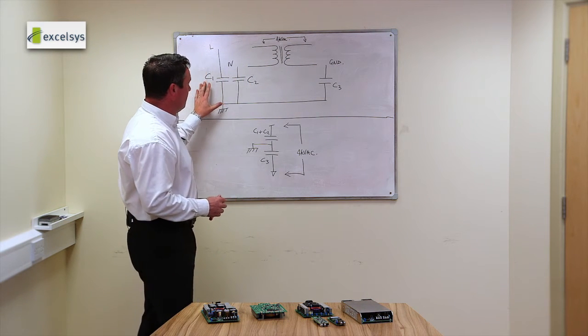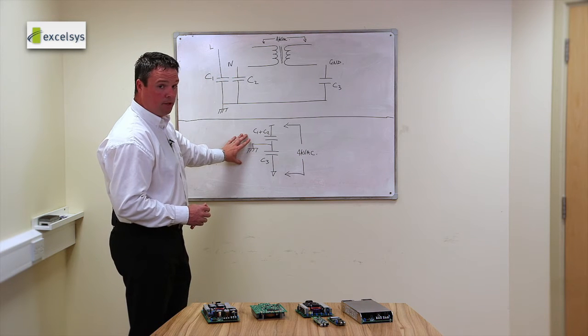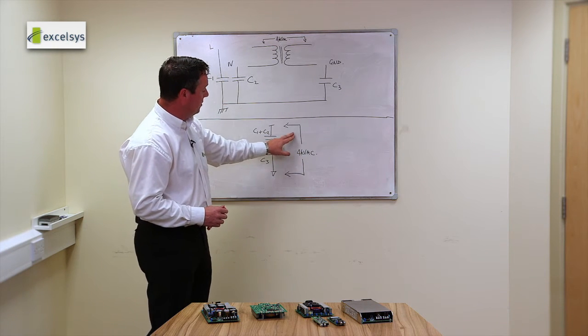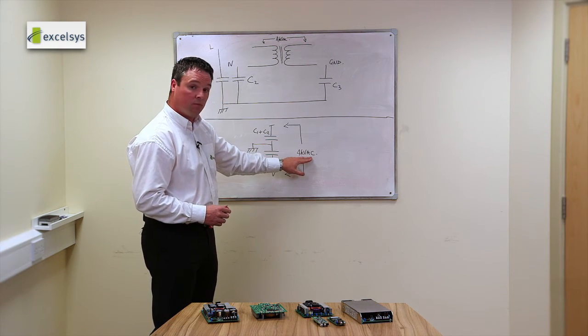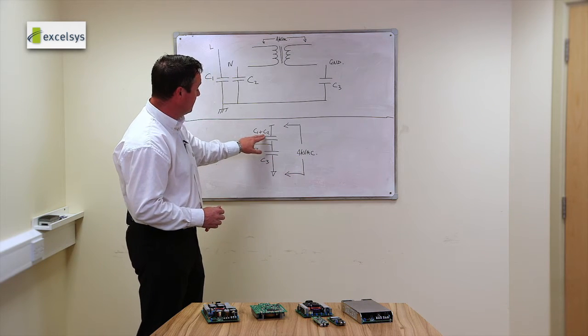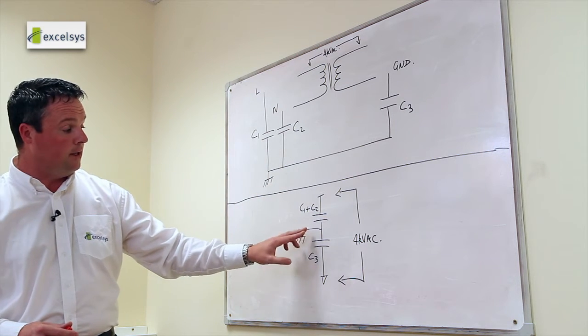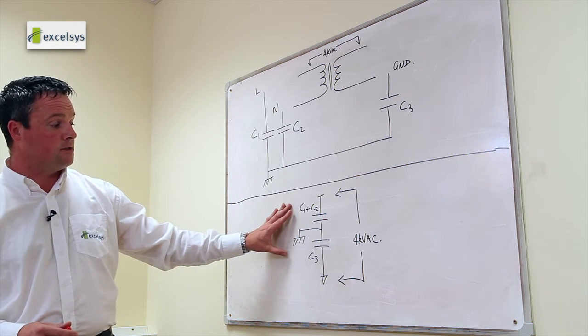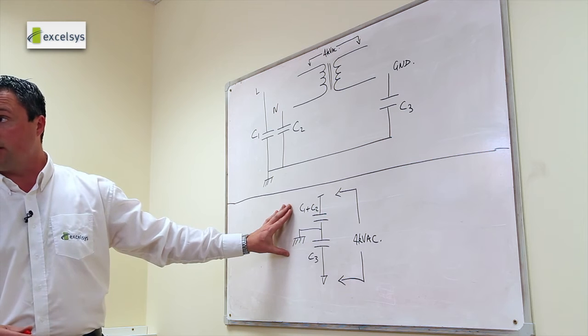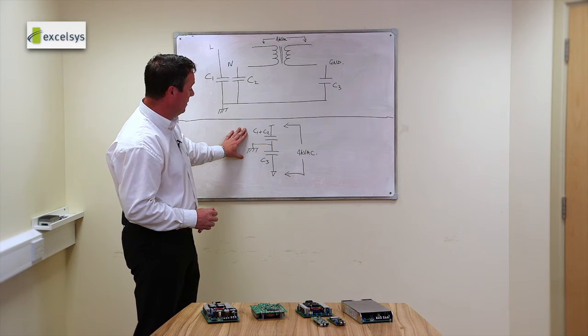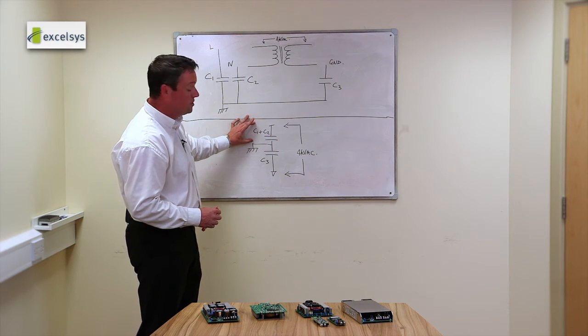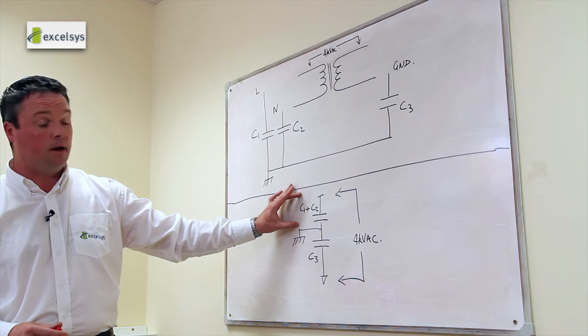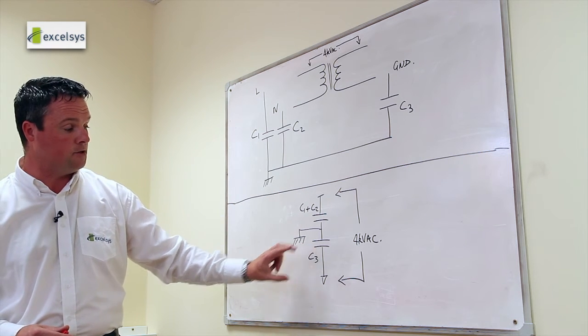So if we take this equivalent circuit and redraw it down here, you'll see that we apply 4kV AC across C1 and C2 in parallel and then in series with C3. Now very quickly you can start to see why damage may occur here. And the reasons for are the voltage divider effect on a combination of C1 and C2 and C3.